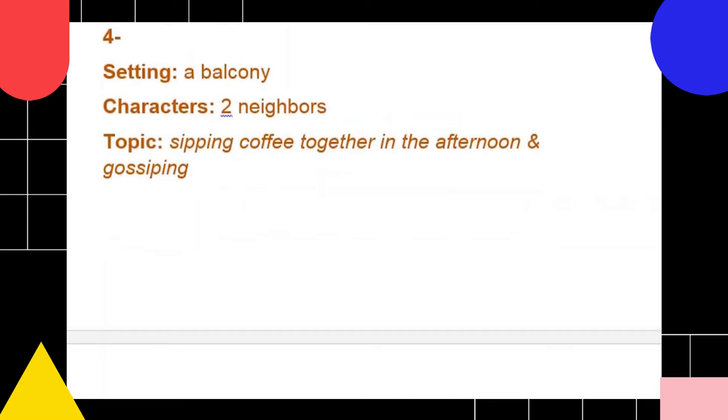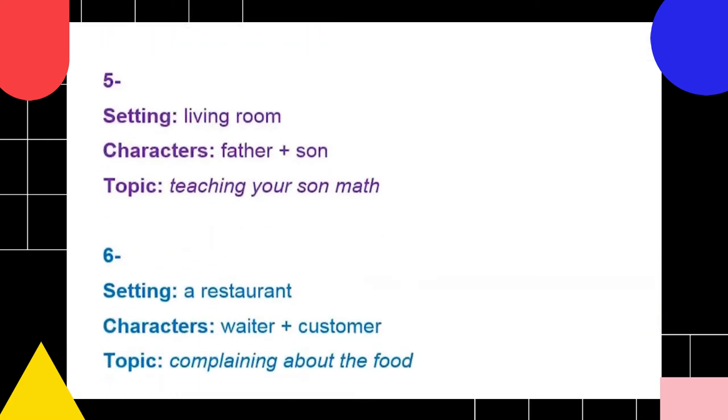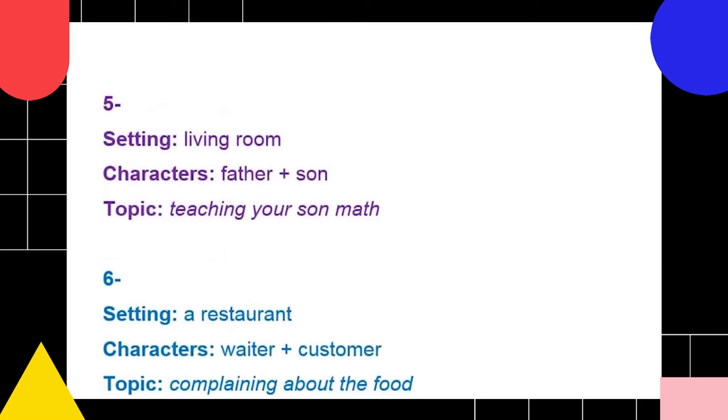It's like two neighbors sipping coffee together in the morning and gossiping. The fifth one is so funny: a father and a son, or a mother and a daughter, whatever, and like one of the parents teaching math to their child.